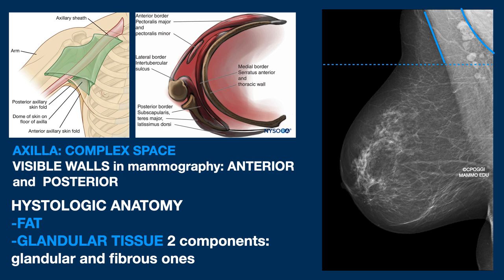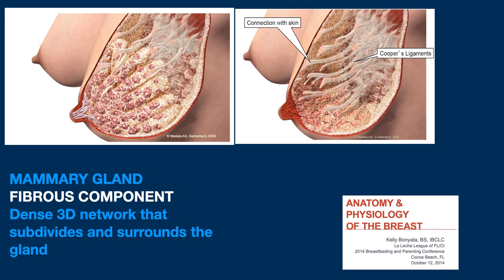Let us turn just as quickly to the histological anatomy. As you know, the breast is made up of fat and glandular tissue, which is in turn made up of two parts: the glandular functional part and the supporting fibrous part. The fibrous part is made up of the progressive subdivision of Cooper's ligaments. There are many others perpendicular to these, which wrap around the gland externally and also subdivide it internally, forming a very dense three-dimensional multi-directional network that is only really comprehensible when you look at a rear coronal breast section, like this one.